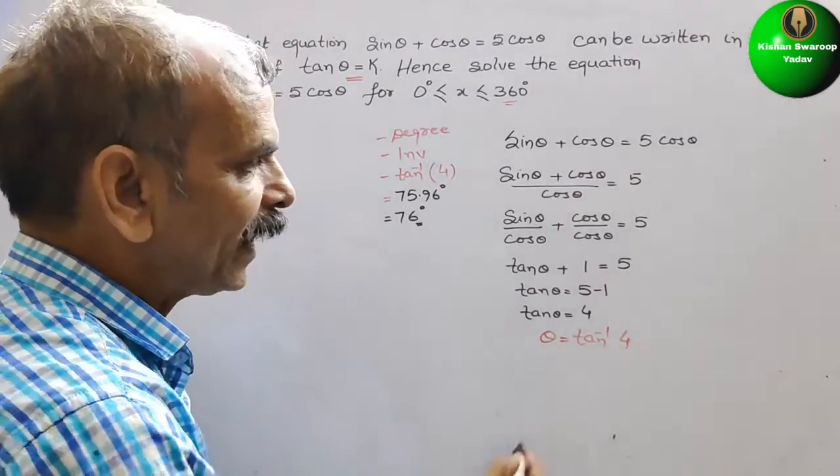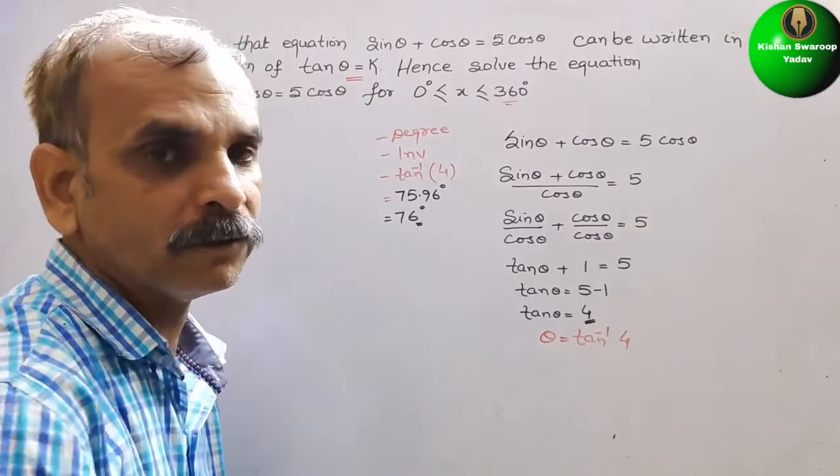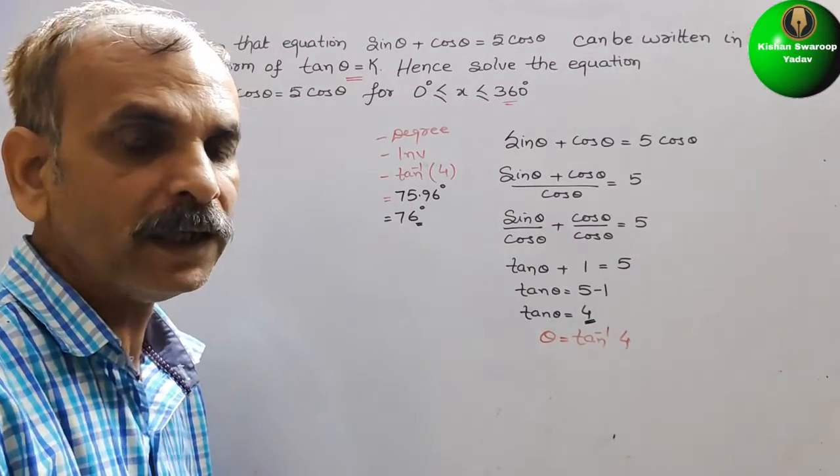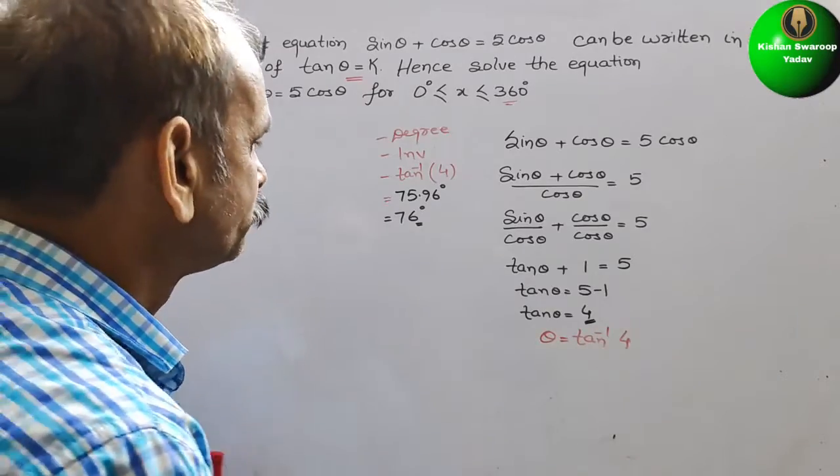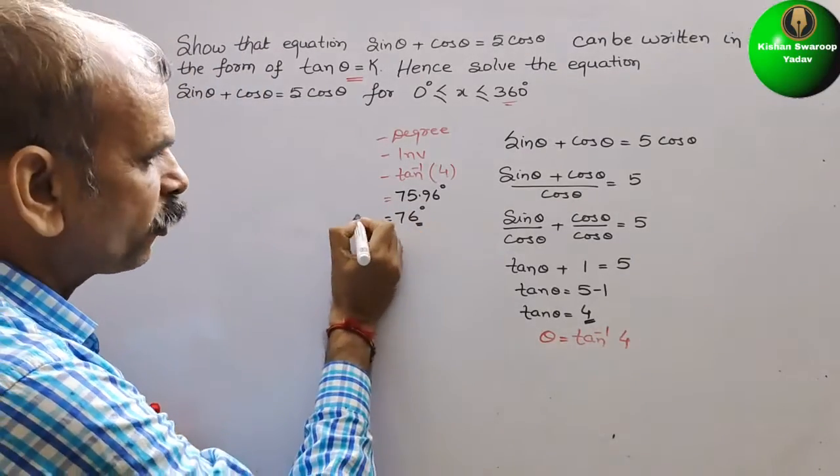So, now we know that this 4 is positive. So, tan is positive in first and third quadrant. So, this comes under first quadrant.